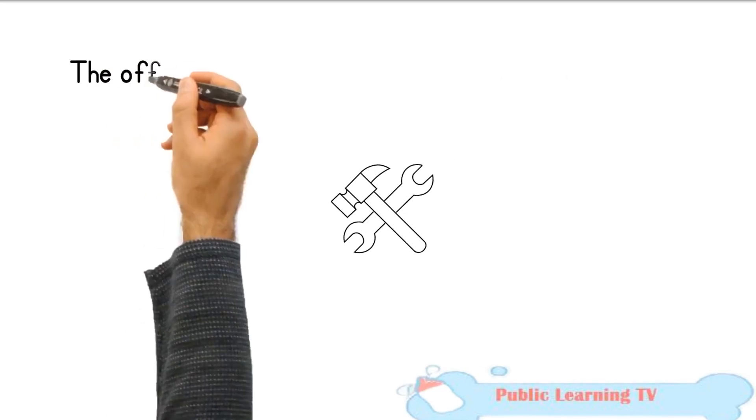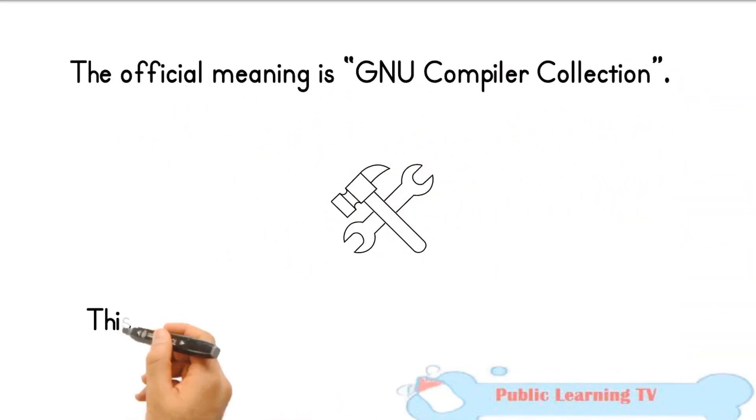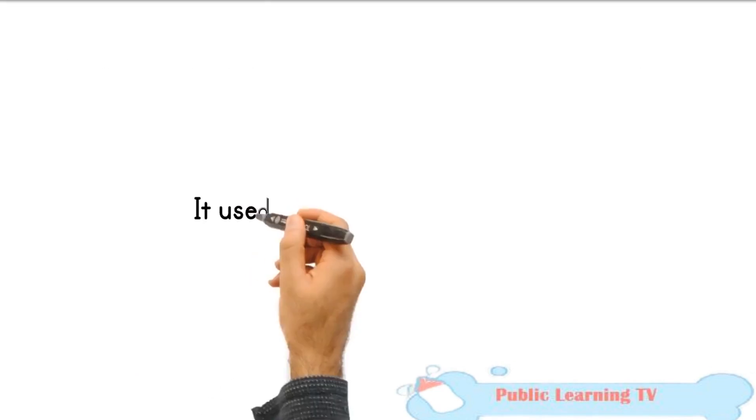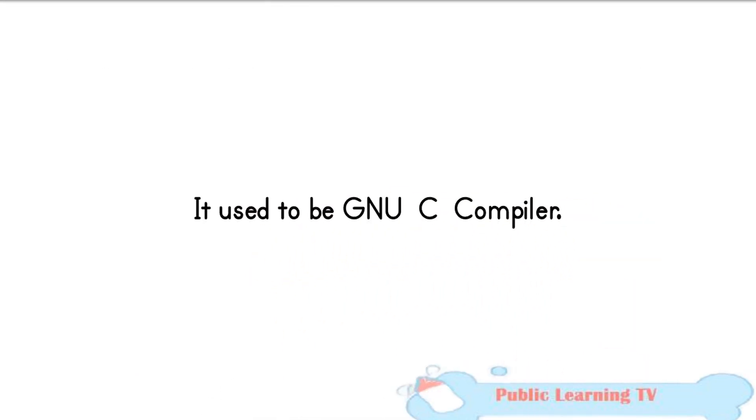The abbreviation GCC has multiple meanings in common use. The current official meaning is GNU Compiler Collection, which refers generically to the complete suite of tools. The name historically stood for GNU C Compiler, and this usage is still common when the emphasis is on compiling C programs.